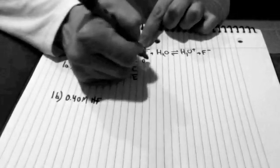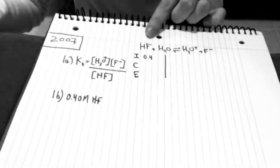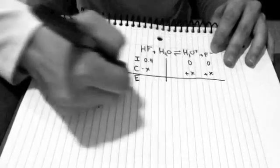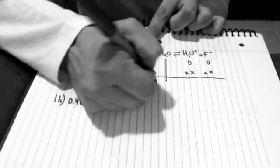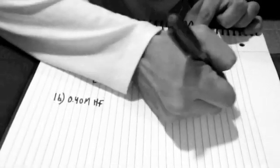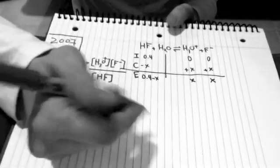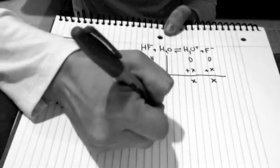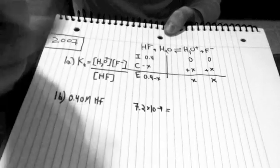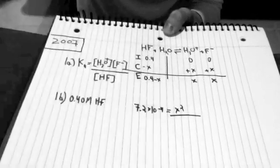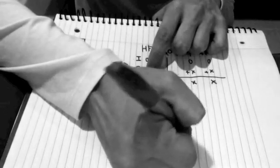My initial concentration of hydrofluoric acid is 0.4. I do not care about water, so I'm going to cross that out. I start with nothing for my products. My change in concentration of hydrofluoric acid is negative X. For the hydronium ion I'm going to gain a positive X, and same thing for the fluoride ion. So my equilibrium concentrations are 0.4 minus X for my reactant, and X and X for each of my products. I'm going to plug that into the Ka expression: Ka equals 7.2 × 10⁻⁴, which equals X² divided by 0.4 minus X.